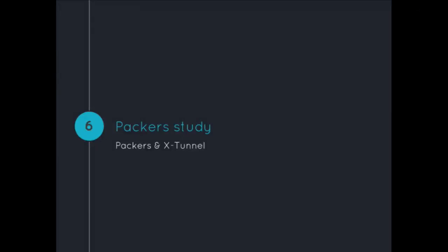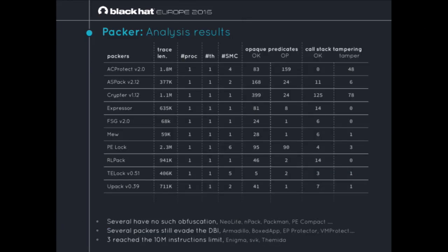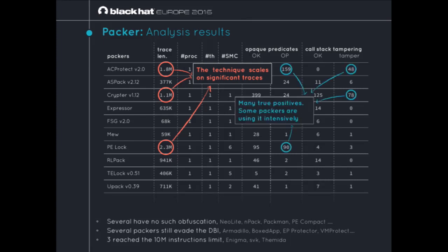For the concrete case studies, we selected 33 packers from the wild and tried to find opaque predicates or call stack tampering in them. We analyzed all 33, bounded execution at 10 million instructions. The goal was a fully automated and systematic analysis to validate our approaches. The results show the analysis scales — thanks to backward bounded DSE, we managed to analyze multi-million trace-length paths. It managed to find good matches for opaque predicates and call stack tampering, with that amount of values being beyond false-positive rates.